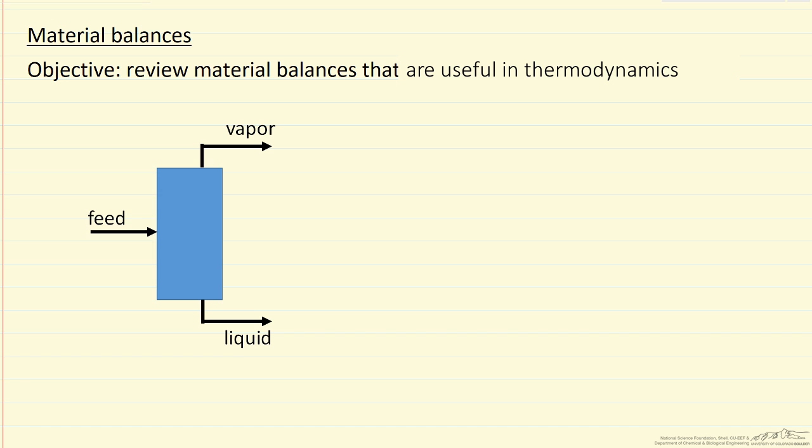I'm going to briefly review how we might use mass balances in a thermodynamic example. In this case we're looking at a flash where we feed a liquid, and I'll use F to indicate the moles per time coming in, and ZA and ZB to indicate the mole fractions of binary mixture A and B.